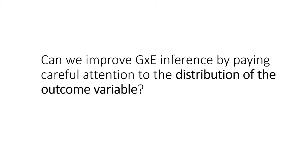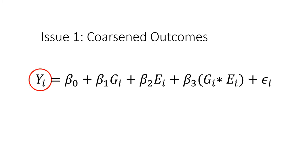So can we improve G by E inference by paying more careful attention to the distribution of the outcome variable? I'll first talk about coarsened outcomes. So what we're asking, what if yi is dichotomous or discrete and it's been coarsened from some underlying continuous distribution?